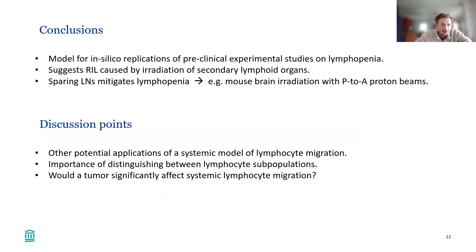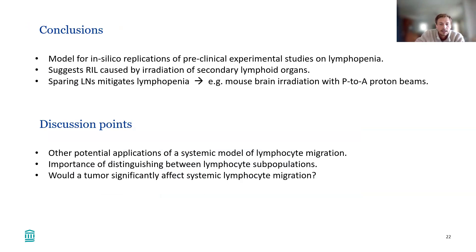In conclusion, we built a model for in silico replication of preclinical studies on lymphopenia. It suggests that radiation-induced lymphopenia is caused by irradiation of secondary lymphoid organs rather than the blood. Therefore, sparing of lymph nodes might help to mitigate lymphopenia. There are several discussion points to think about, and I'll hand over to someone else.